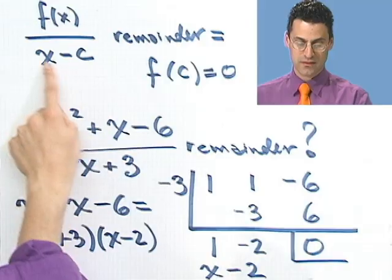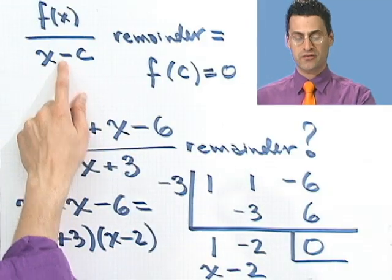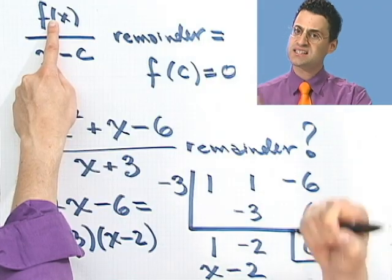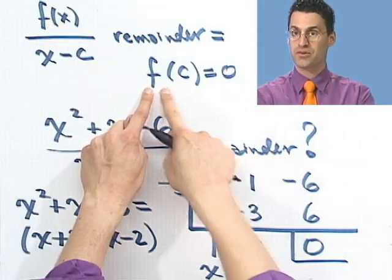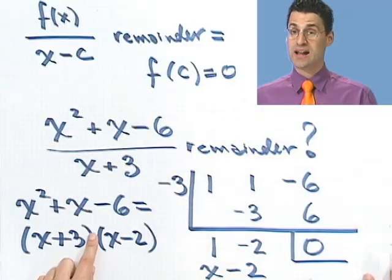So the factor theorem states the following. Factor theorem says the polynomial x minus k is a factor of a polynomial f of x if and only if f of k equals 0. So x minus k, this kind of thing, is going to be a factor of a polynomial precisely when this equals 0. Precisely when that equals 0. And that is the factor theorem.